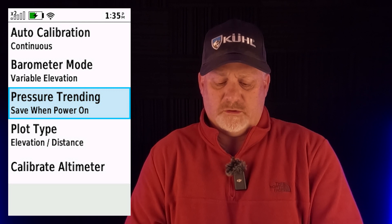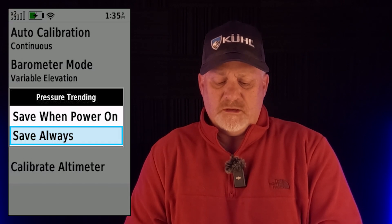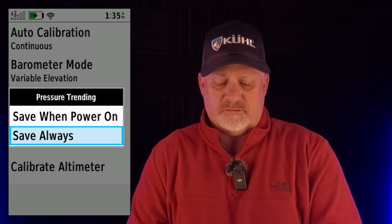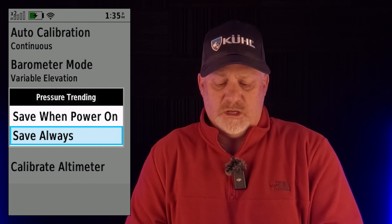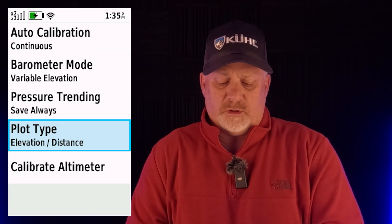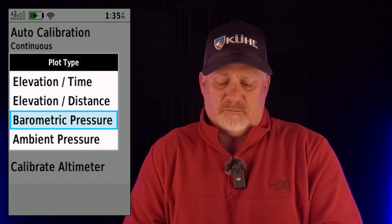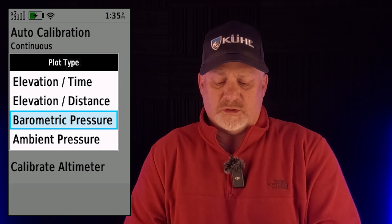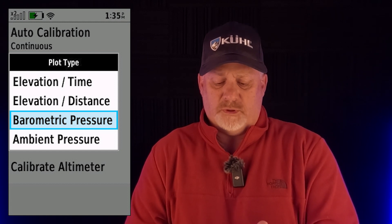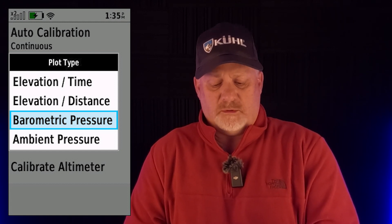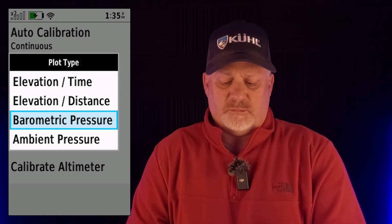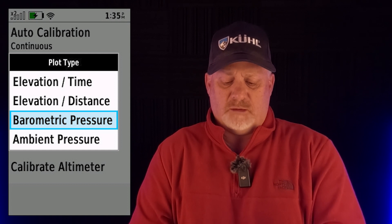Pressure trending — it says save when power on and save always. I have save always. Then there's plot type, and I have barometric pressure, but you can pick elevation time, elevation distance, barometric pressure, or ambient pressure.